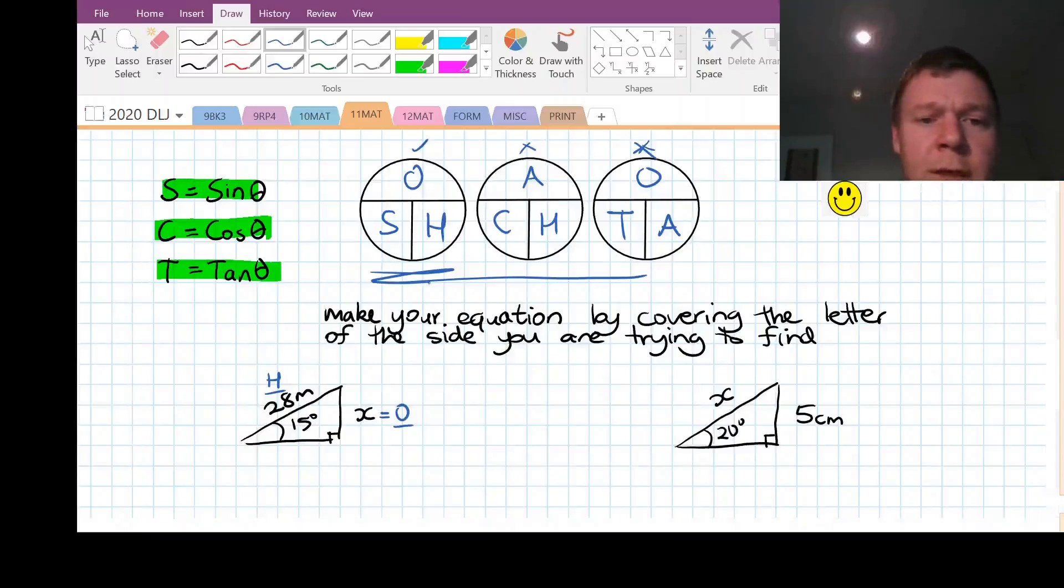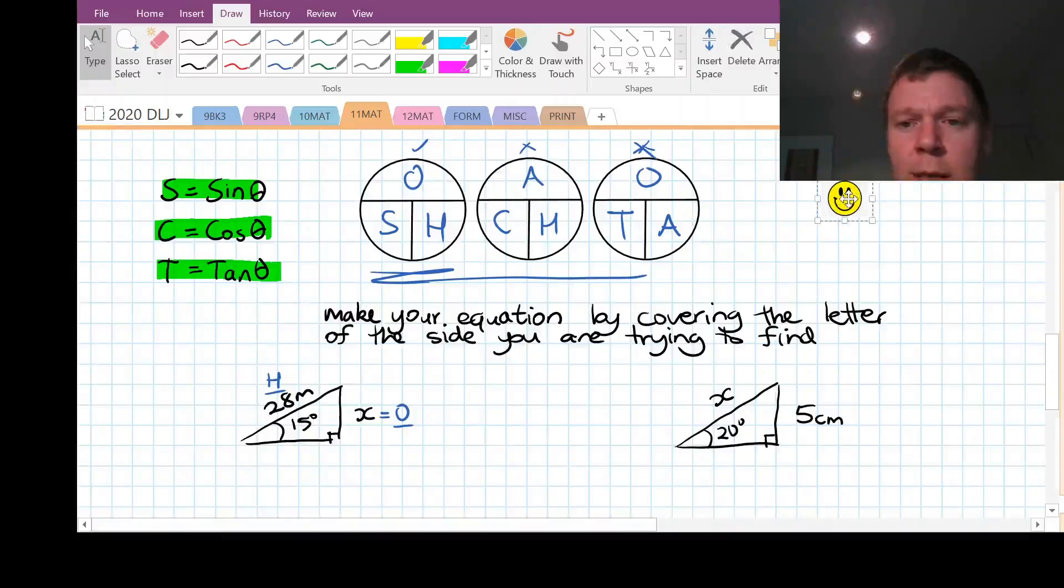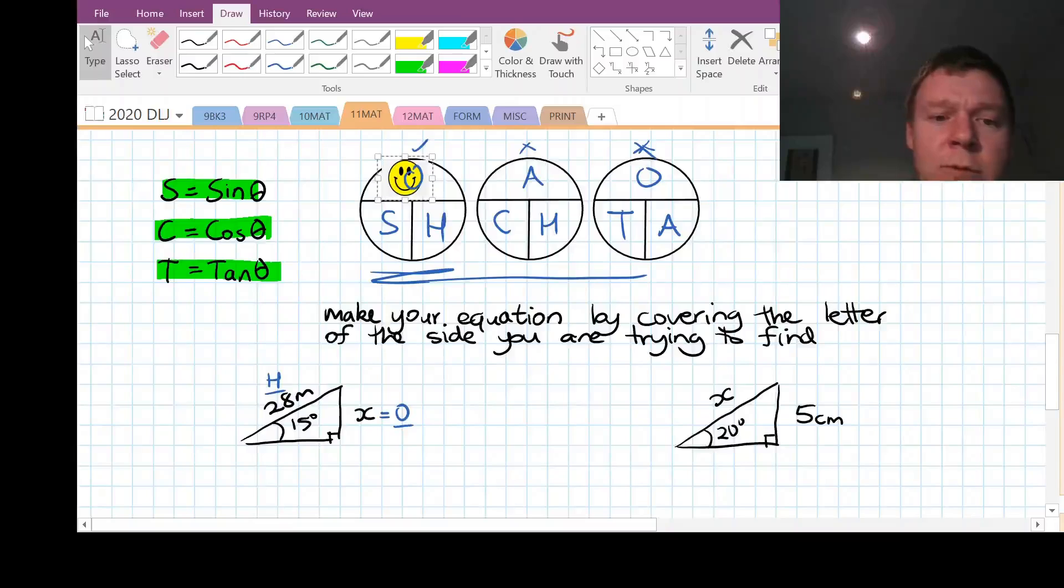Okay. So the thing that we're trying to find out is the O. So I'm just going to drag this smiley on top of the O. So you put your finger on top of the O, and that reveals what the rest of the equation is. So now we're left with sine times hypotenuse. That line in between S and H is a multiplier. So we have the opposite equals the sine times the hypotenuse.